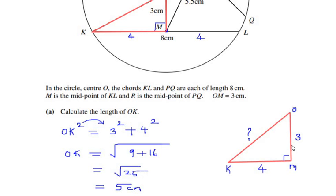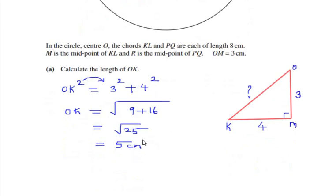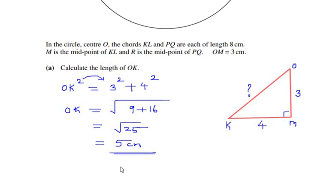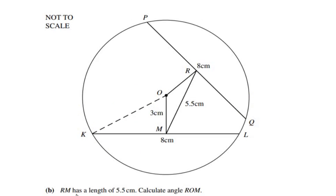So the length of OK is five centimeters. Now let us look at part B of this question: RM has a length of 5.5 centimeters — calculate angle ROM. To find the angle ROM, let us consider the triangle ROM. We can see that the length of OR is also going to be three centimeters.